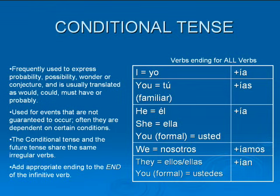The conditional tense is very similar to the future tense. It's used to describe events that are not guaranteed to happen, and they're often dependent on certain conditions. Just like the future tense, it shares the same 13 irregular verbs, and you keep the entire verb and you add the appropriate ending. This is going to look familiar, because they're the same as the endings for the imperfect ER and IR verbs. The difference is: for the imperfect, you remove the ER and IR and add the appropriate ending; for the conditional, you leave the entire verb intact and then add the appropriate ending.